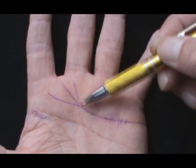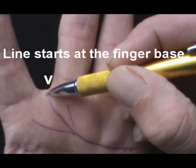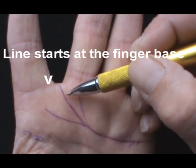If the line actually starts from the base of the fingers, then the person could be more empathic, that is someone who can sense the feelings of others very well.